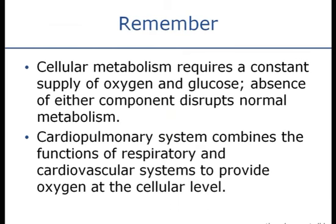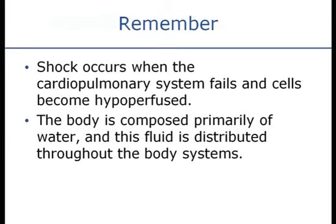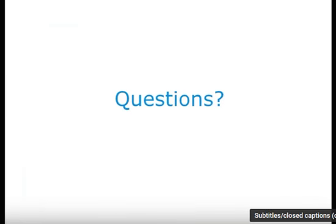Remember that metabolism requires a constant supply of oxygen and sugar, and the absence of either disrupts normal metabolism. It's the cardiopulmonary system — the respiratory and cardiovascular systems working together — that provide oxygen at the cellular level. When that fails, shock or hypoperfusion occurs when organs are not receiving adequate perfusion. We'll discuss in detail what happens when you go into shock when we hit that chapter. The body is composed primarily of water — well over 65% — and this fluid is distributed throughout all body systems through a complex process regulated by the kidneys.